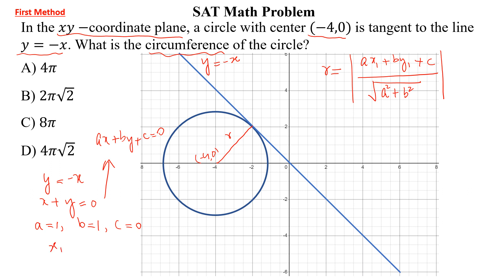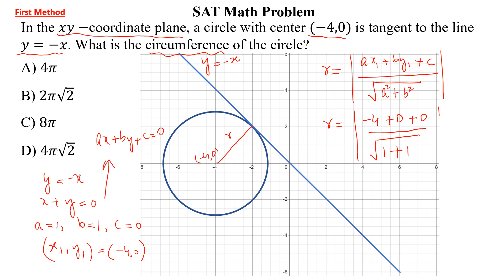The point (x₁, y₁) is (-4, 0). Putting the values in: 1 × (-4) = -4, plus 1 × 0 = 0, plus c = 0, divided by √(a² + b²) = √(1 + 1). Simplifying this, r = 4 divided by √2.